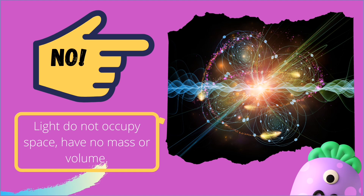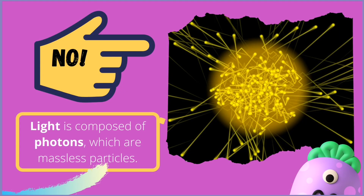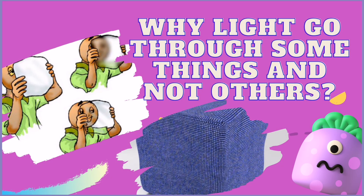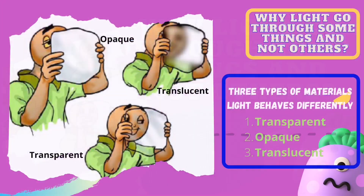Light does not occupy space, has no mass or volume, and is therefore not considered matter. Light is composed of photons. The photon is a massless particle. Depending on the type of matter light comes into contact with, light will behave differently. Sometimes light will pass directly through matter like air or water.